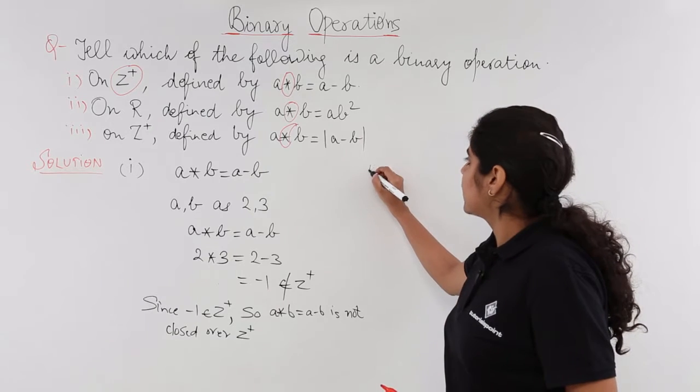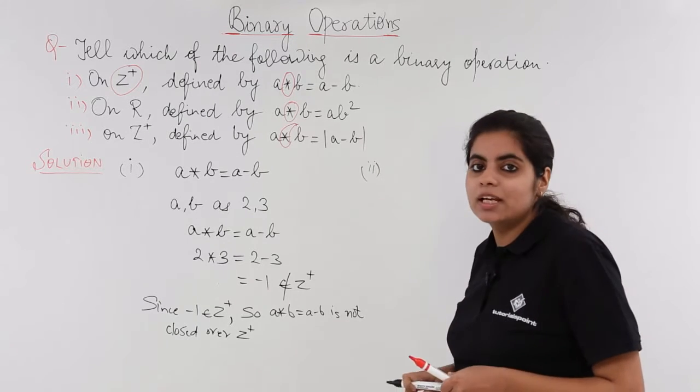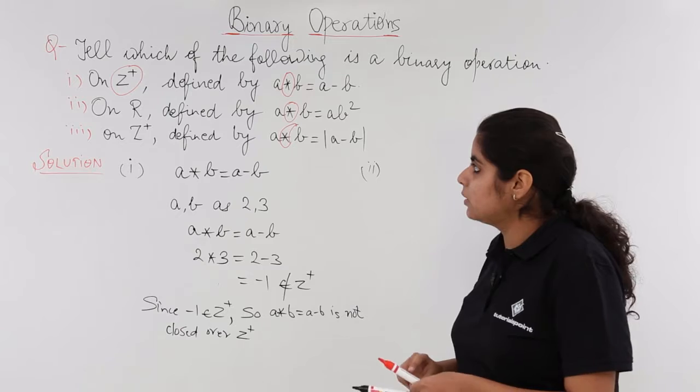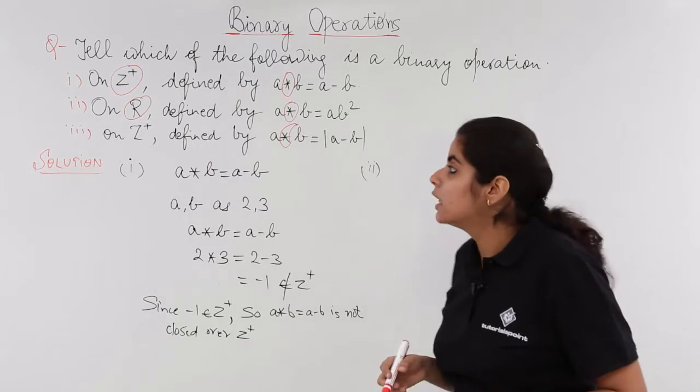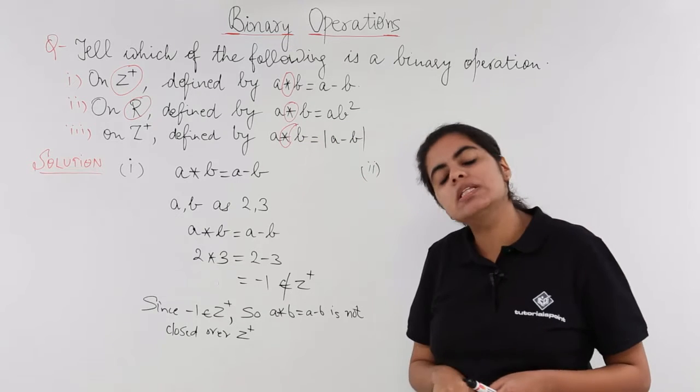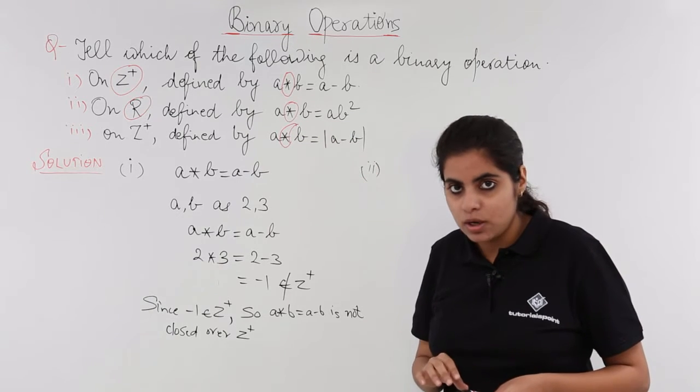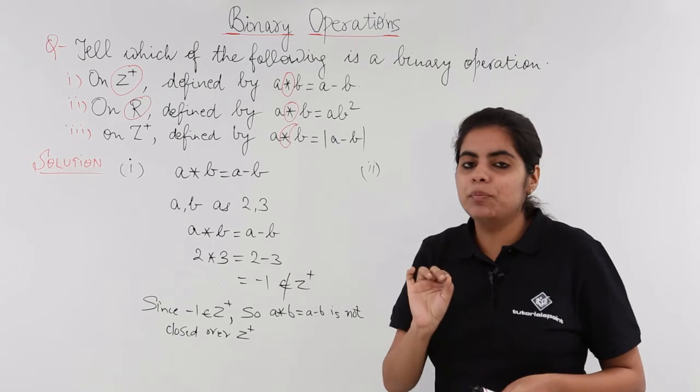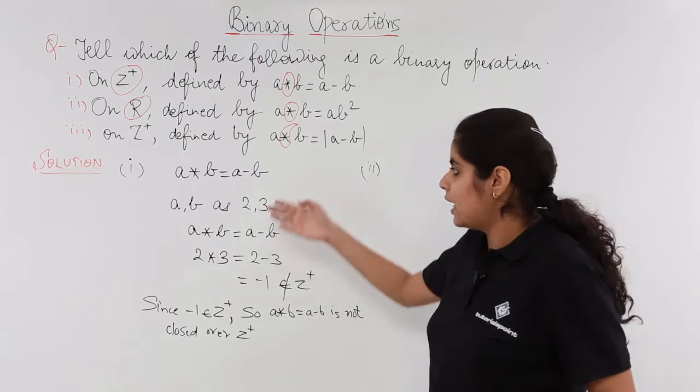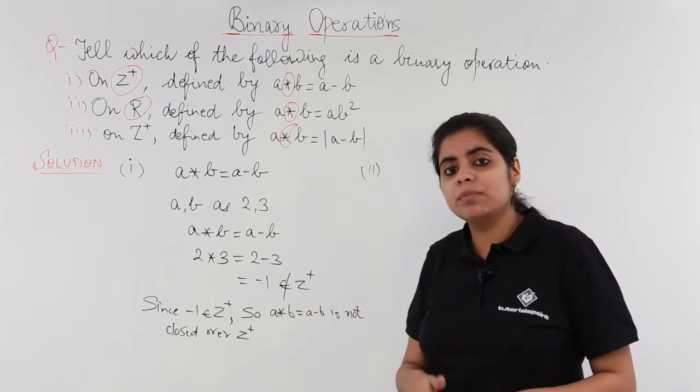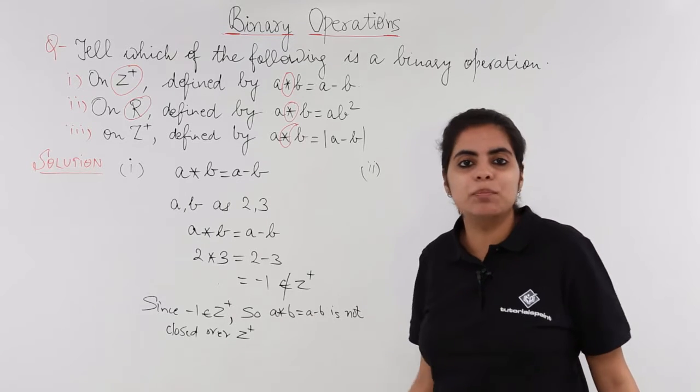Let us move on to the second part. Now what is the second part? The second part asks me on R, that means on real numbers defined by A star B is equal to AB square. Now we need an example to disprove something if it is incorrect like this, but if something is already correct, how many examples would you show?